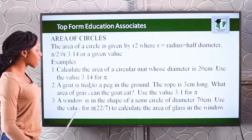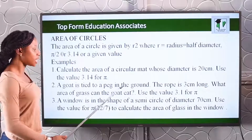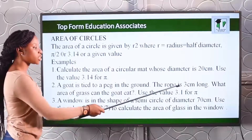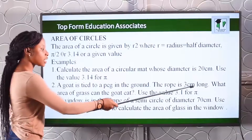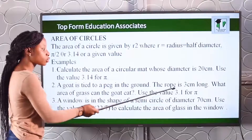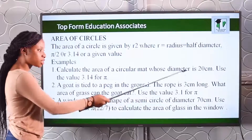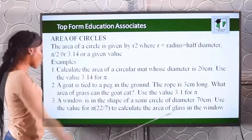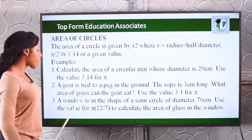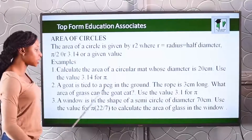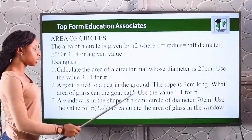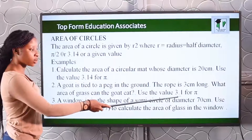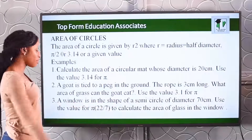Number two: a goat is tied to a peg in the ground. The rope is 3 centimeters long. What area of grass can the goat eat? Use 3.14 for pi.